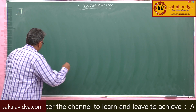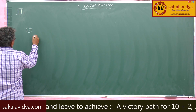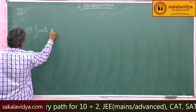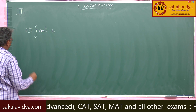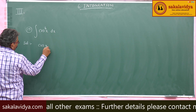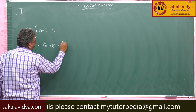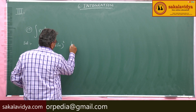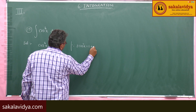The 15th problem: Evaluate integral of cos x to the power of 4 dx. Now cos x to the power 4 can be written as (cos² x) whole square.